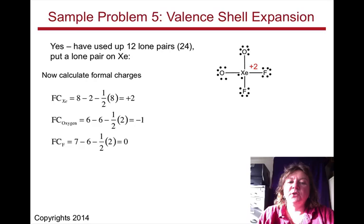Yes, we've used up 12 lone pairs, all 24 electrons, by putting a lone pair on xenon. Now, let's take a look at the formal charges.